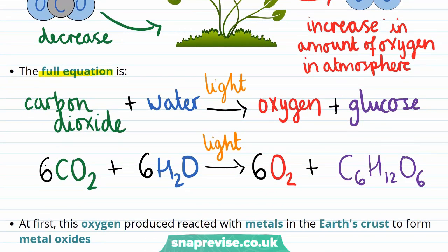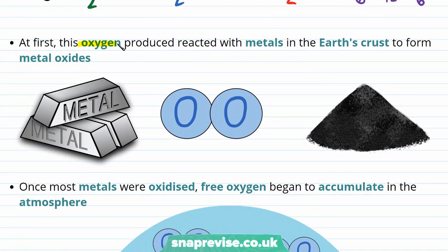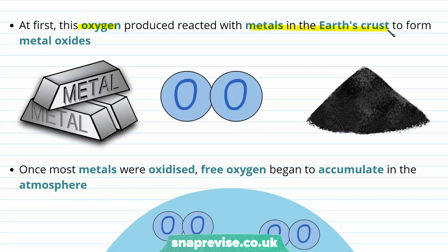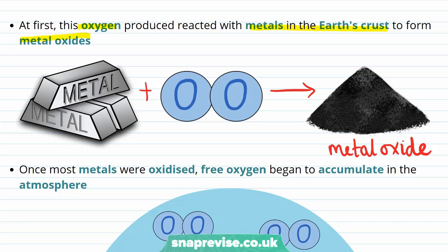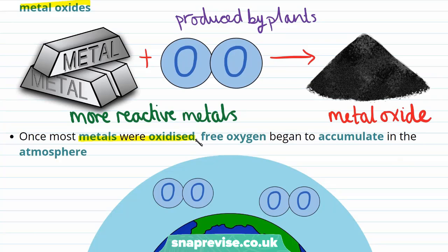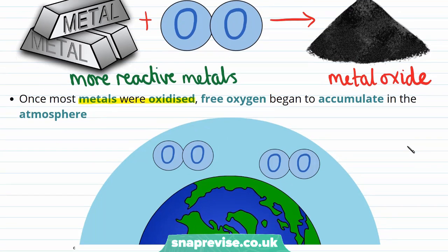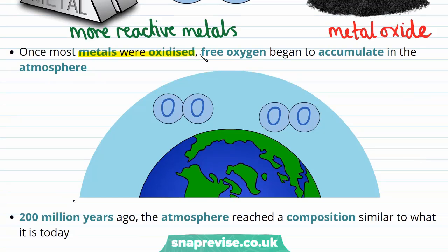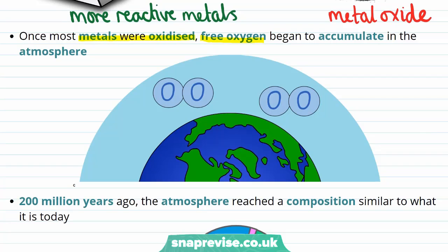So what happened to this oxygen after this process began? At first, some of the oxygen produced reacted with metals in the Earth's crust in order to form metal oxides. A metal oxide forms in a simple reaction between a metal and oxygen, and many useful metals are contained within the Earth's crust in this oxide form. This carried on until most of the metals reactive enough to be oxidised had already undergone the process. After this point, oxygen was still being produced by plants, and therefore free oxygen — oxygen that exists as the diatomic molecule on its own — began to accumulate in the atmosphere, leading to a rise in oxygen levels.